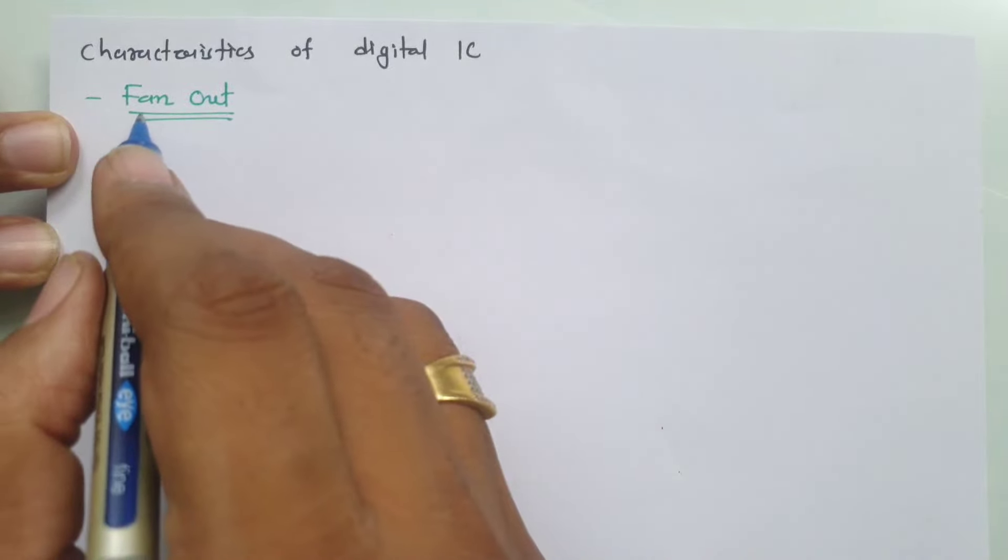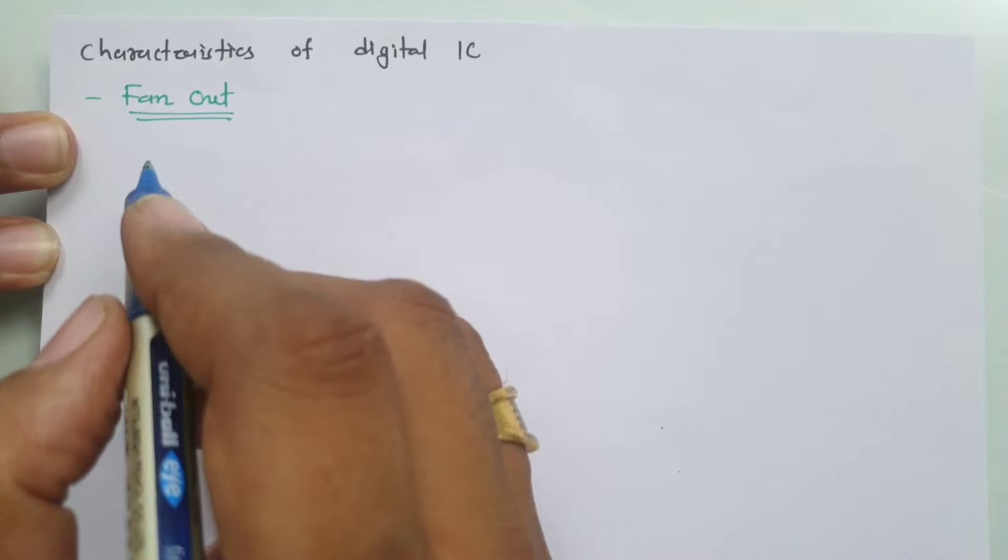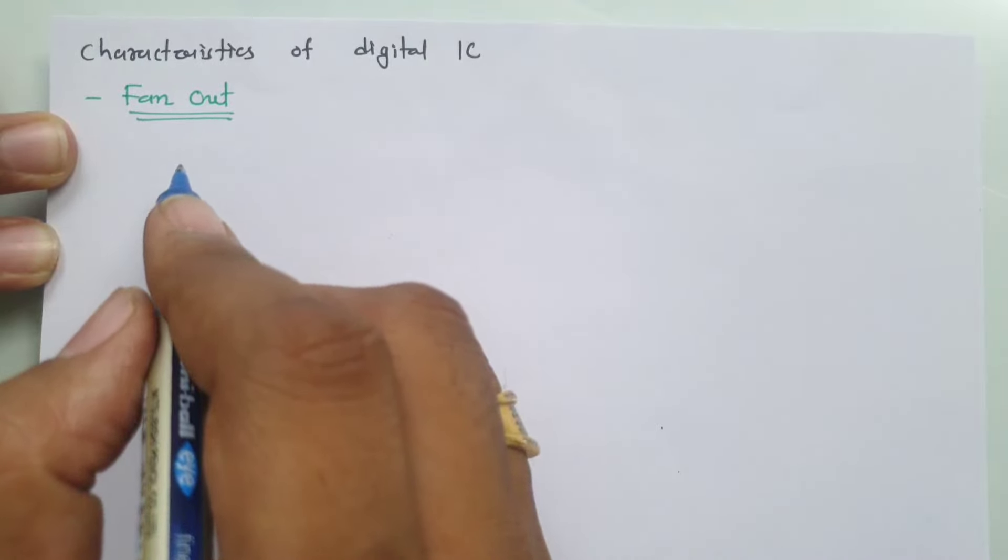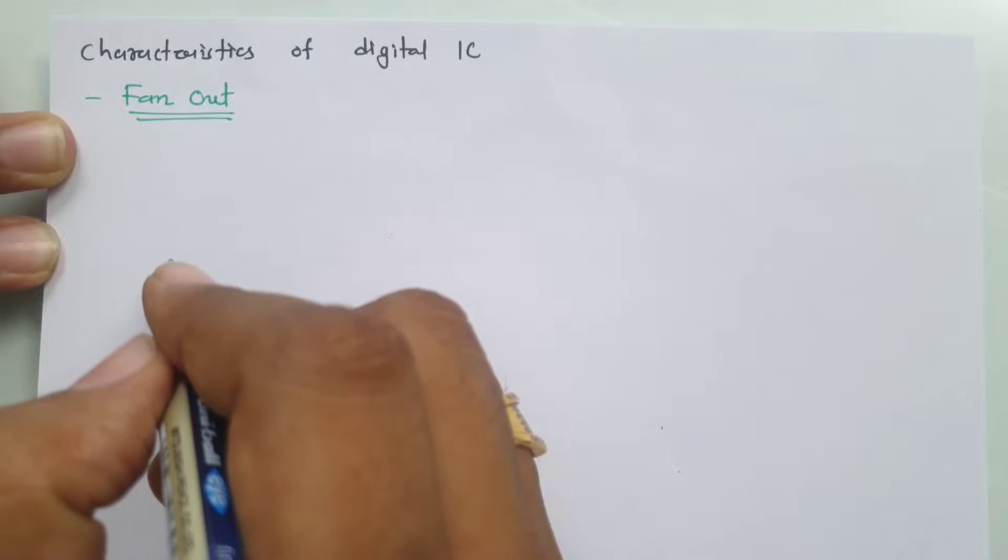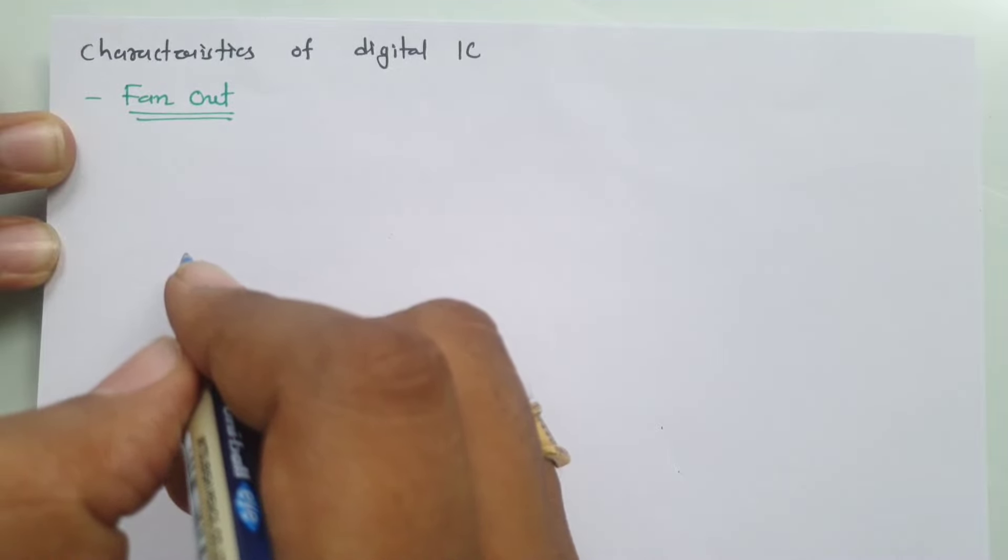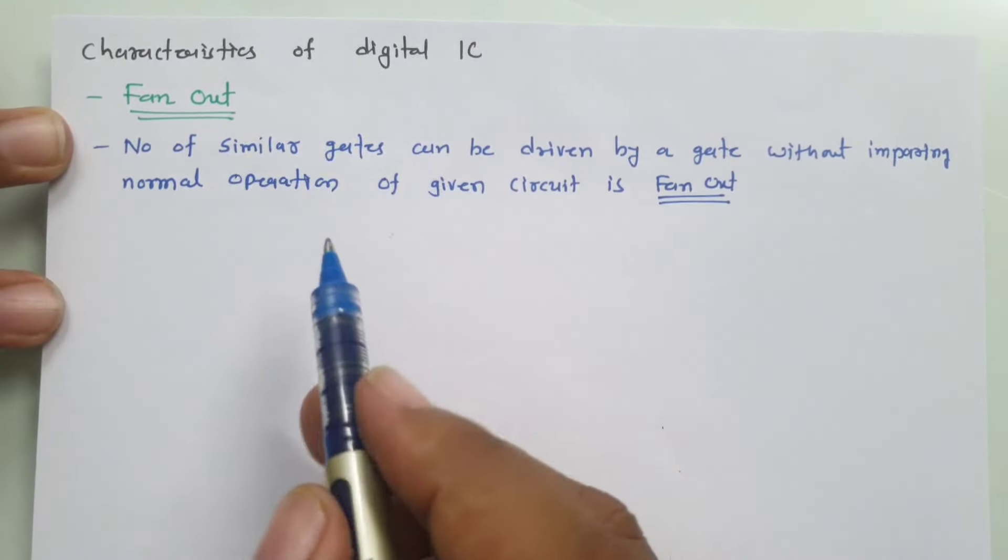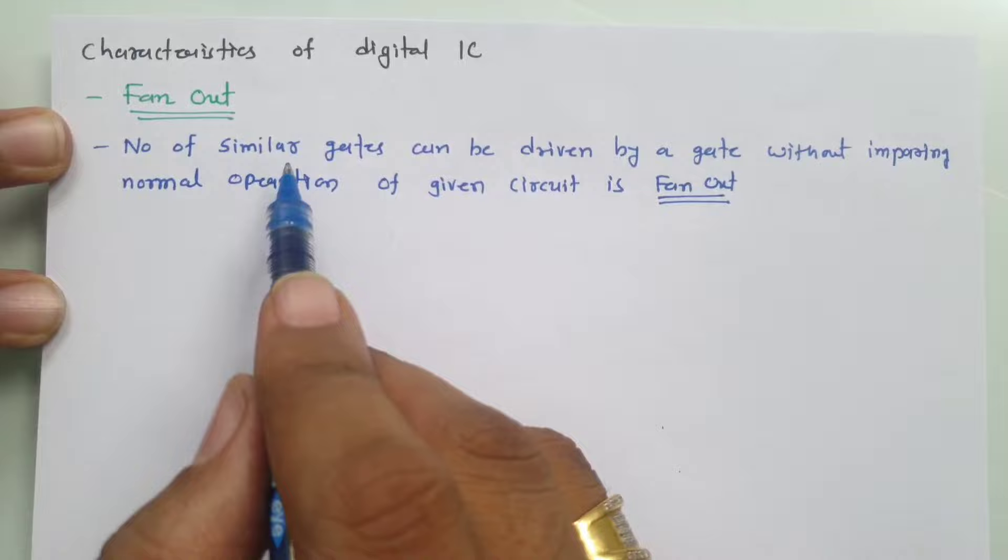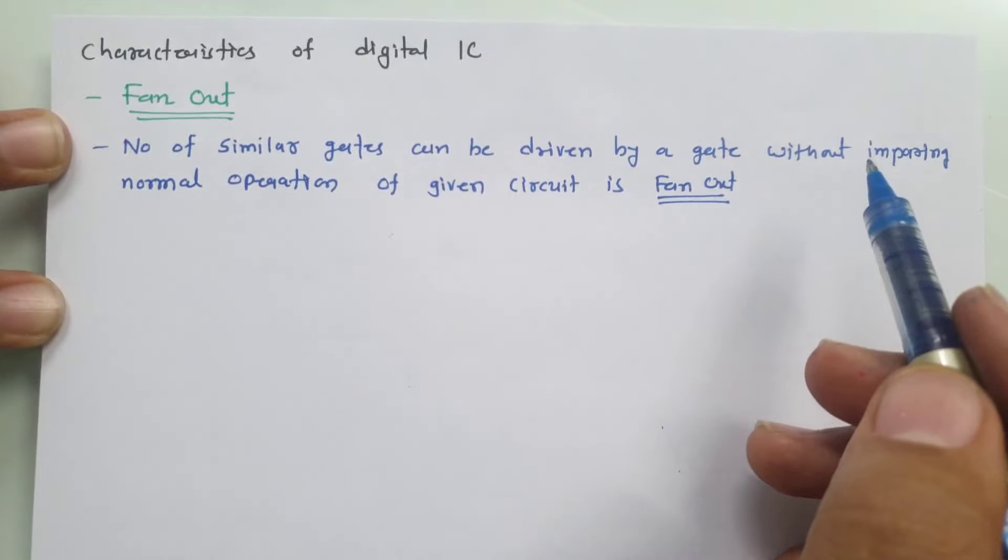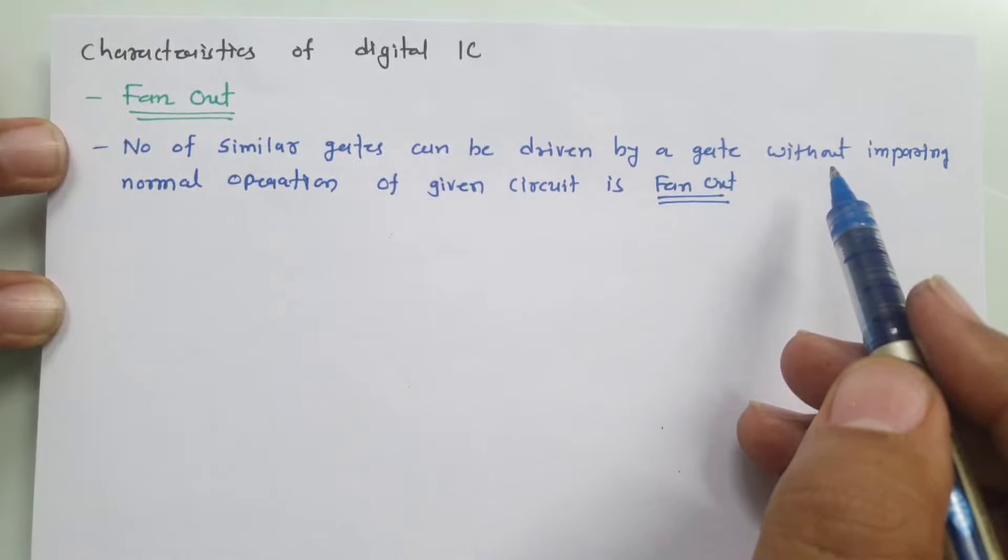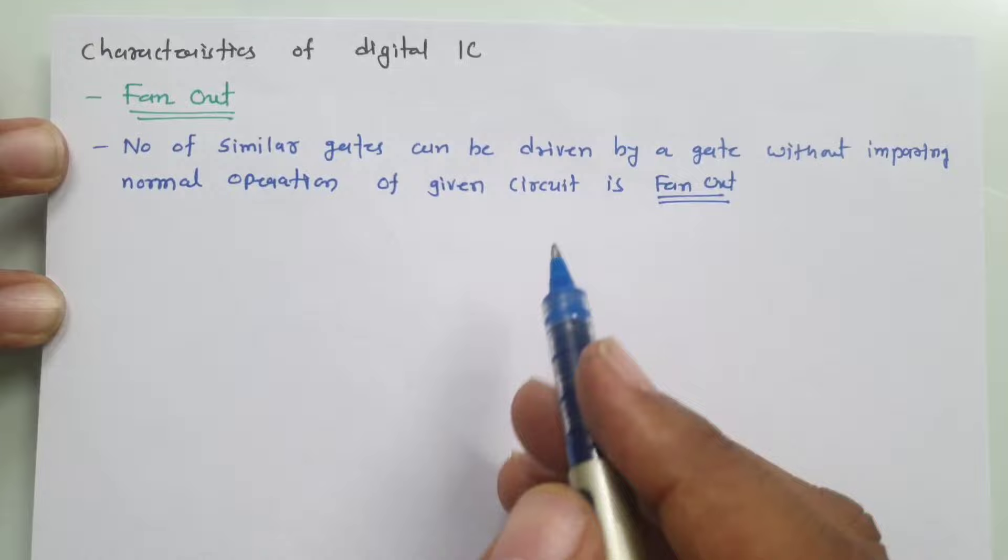Let us begin this session with the first agenda, that is fan-out. So let us try to understand what is fan-out. It explains the number of similar gates that can be driven by a gate without impairing normal operation of given circuit. We are able to drive number of similar gates by a given gate without having any problem in terms of functioning of given logical circuit, and that is fan-out.